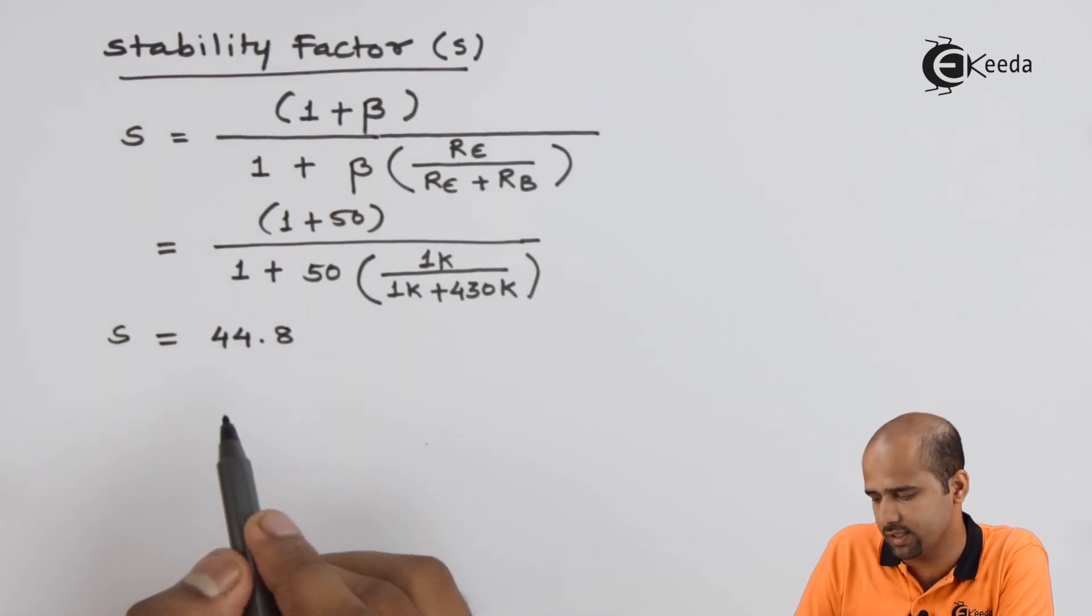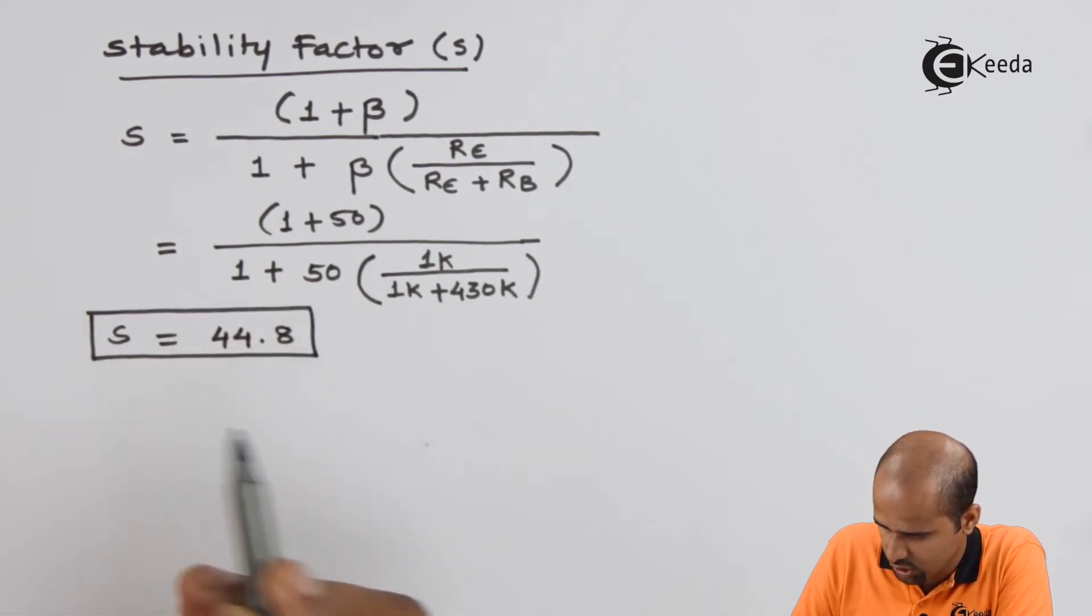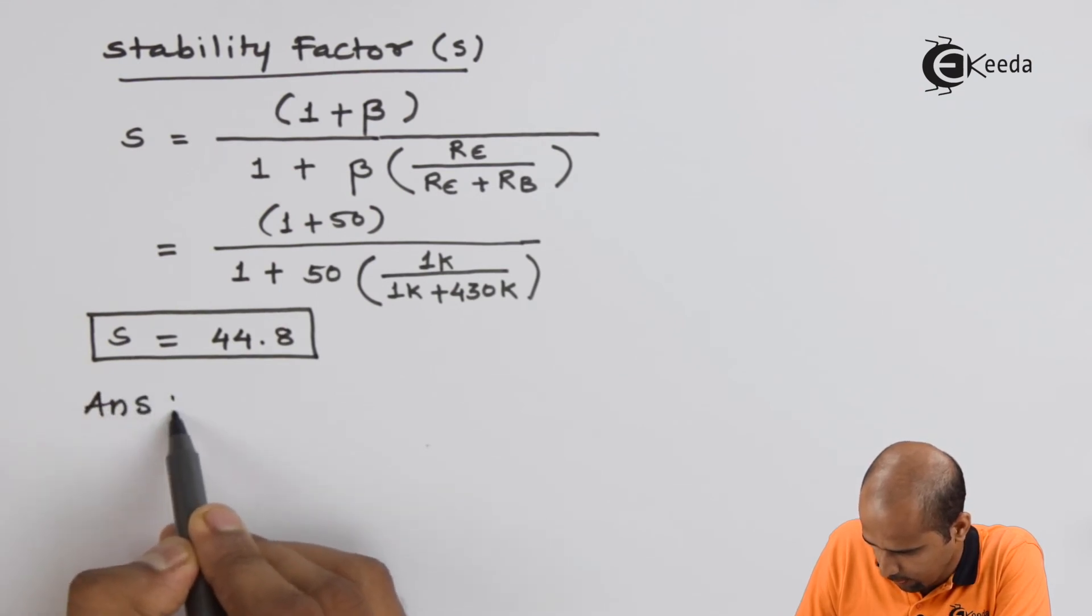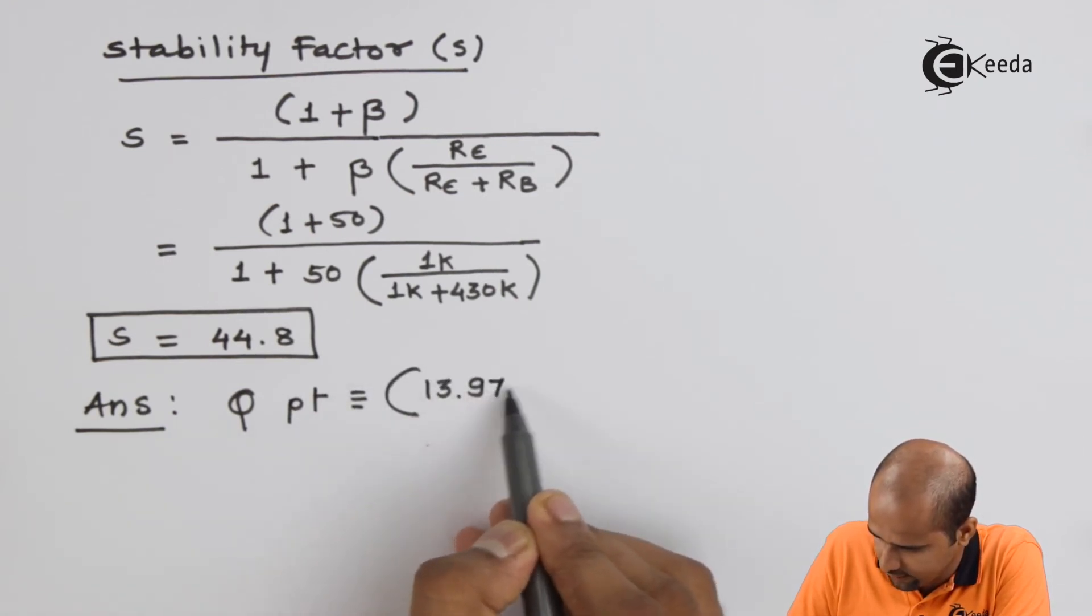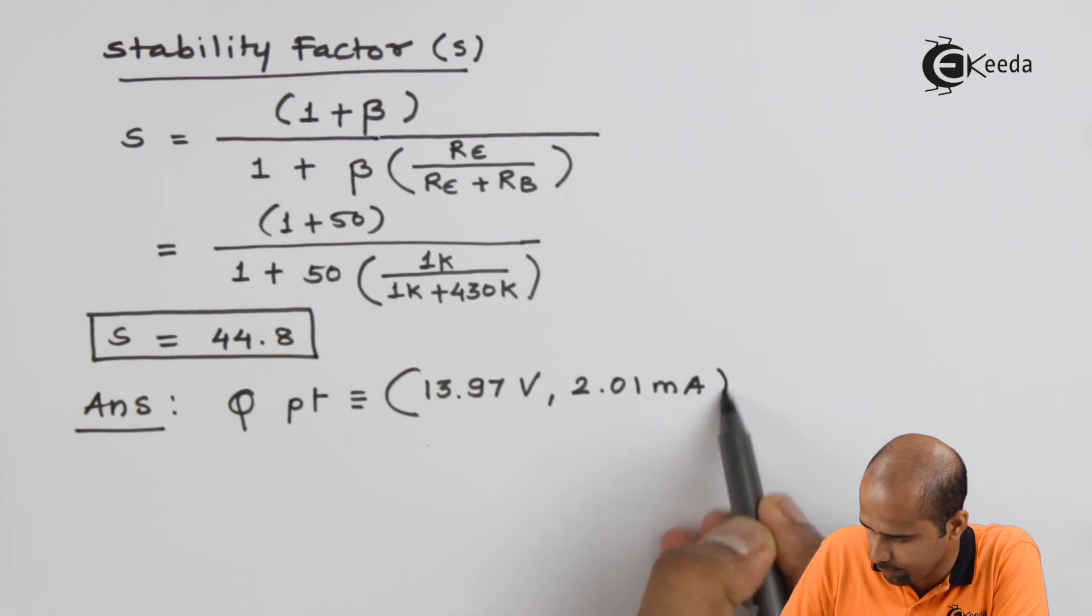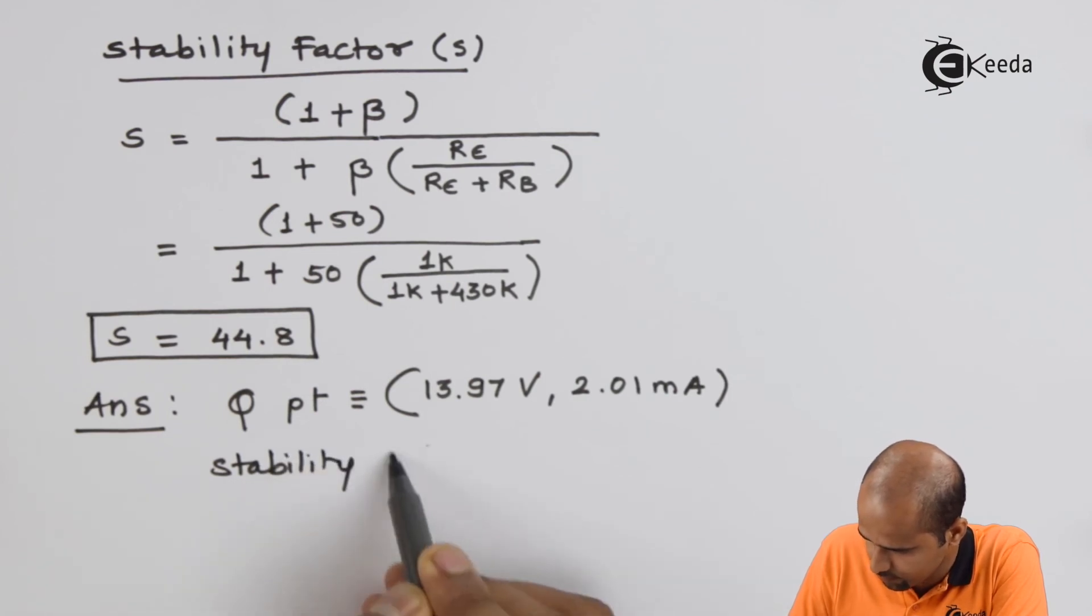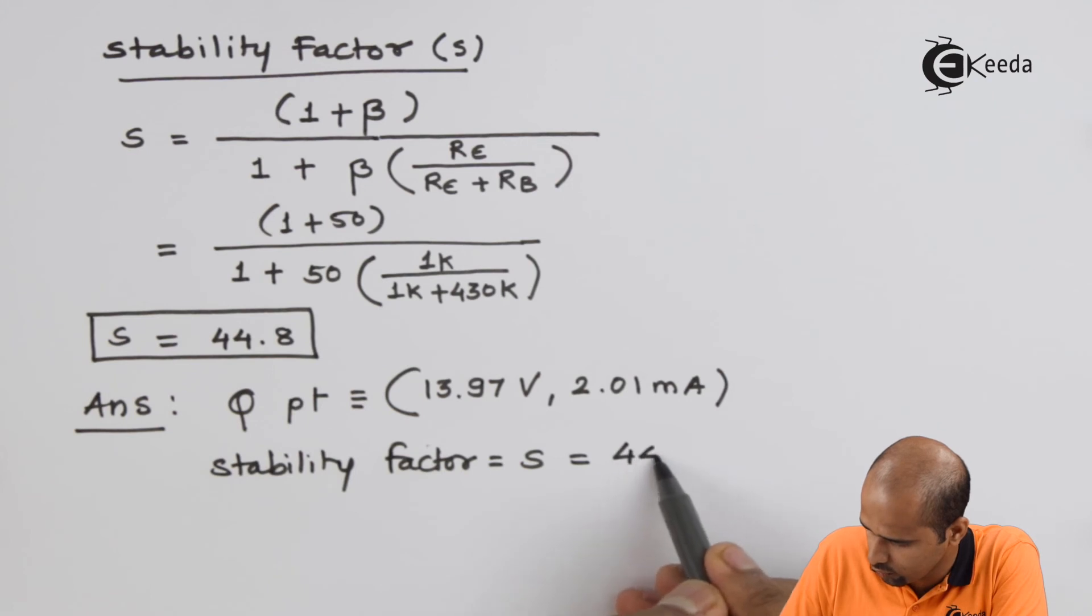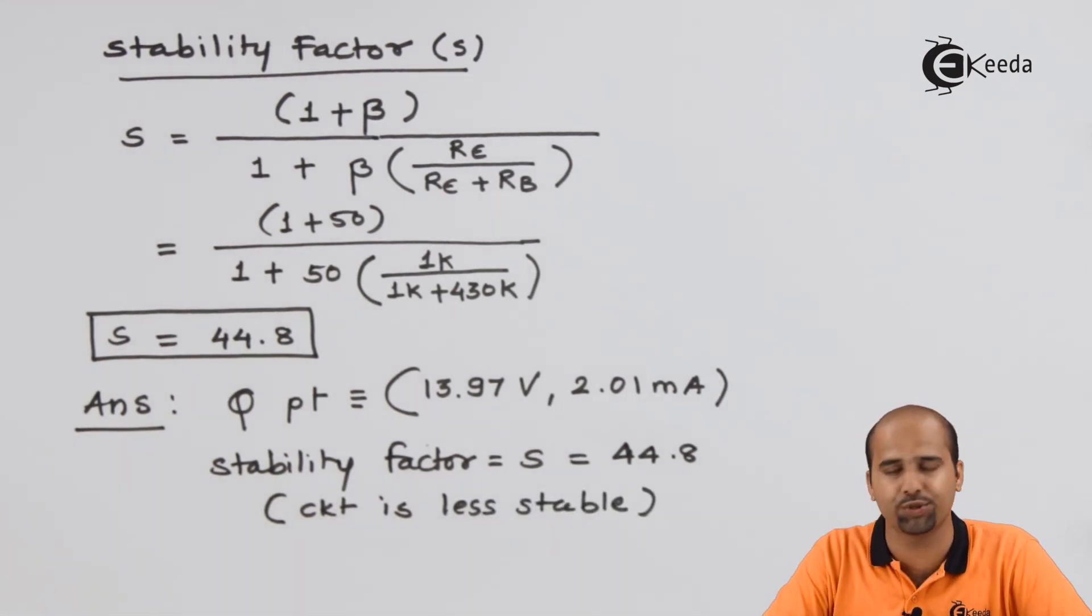So your stability is less than that of 50. So stability factor is this. So your answer is Q point, which is nothing but 13.97 volts. And your value of ICQ is nothing but 2.01 milliampere, x coordinate and y coordinate respectively. And the stability factor S is equal to 44.8. And you have to add one comment as well. Circuit is less stable. So this is how we reach to the final answer.